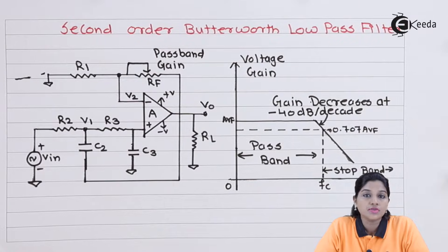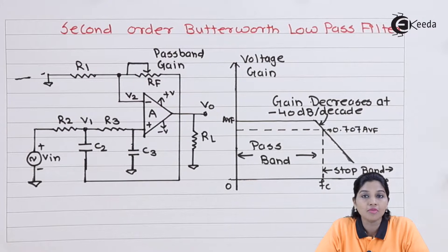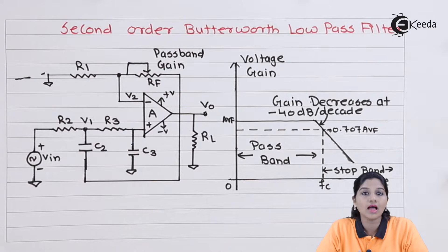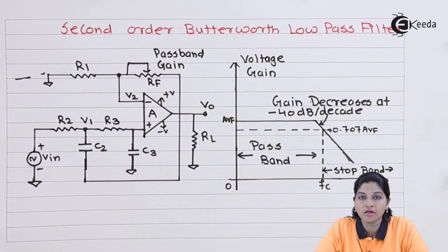A filter is basically a circuit which acts as a frequency selective circuit. That means it will allow only a particular frequency and blocks all other frequencies outside the band of frequency which is allowed by the filter.